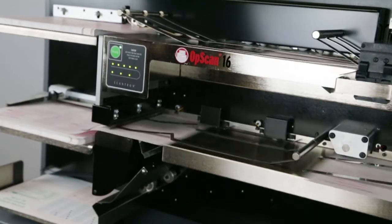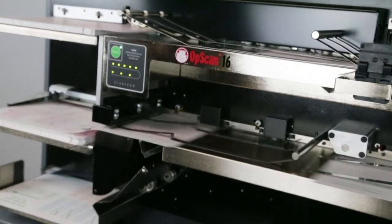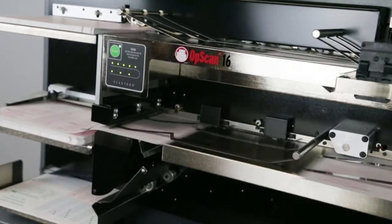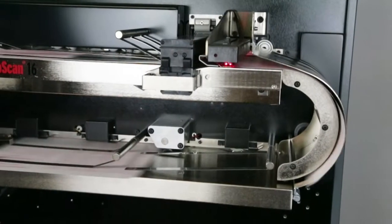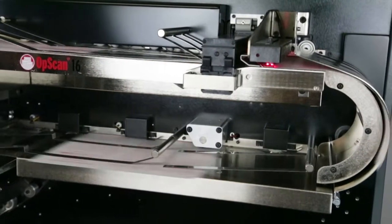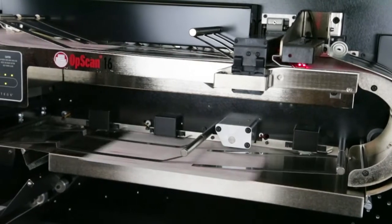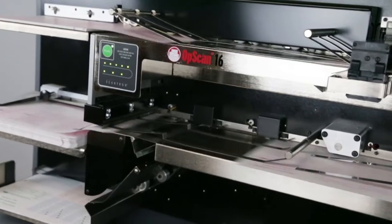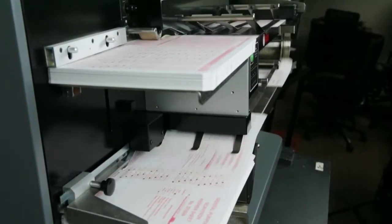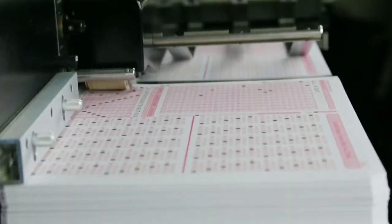That's why the OpScan 16 Optical Mark Recognition System is an ideal choice in any high-volume scanning environment. Processing up to 10,800 sheets per hour, the OpScan 16 stands up to the most rigorous scanning needs. It's designed to run continuously, making it the right choice when volume and efficiency matter most.